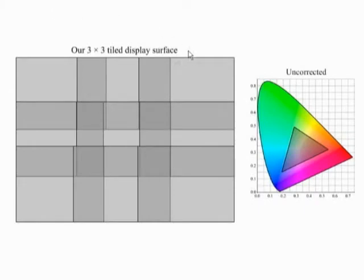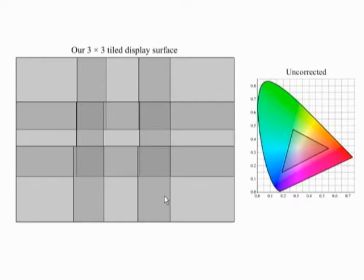Even when tiled displays are made from projectors of the same make and model, they show substantial color variation across the entire display. We visualize the spatial variation in color gamut here. The chrominance gamut, shown by the triangle, changes as we move from one point in the display to another. We visualize the brightness of the display by the brightness of the triangle. Note that this also changes significantly as we move from one point in the display to another, especially when we cross the overlap regions.